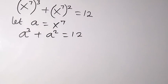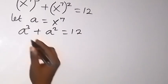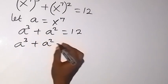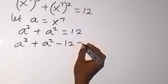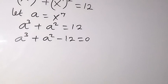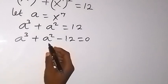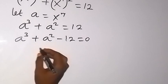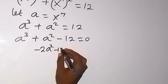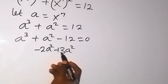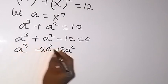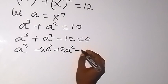From here, we bring 12 to this side to form an equation: a raised to power 3 plus a raised to power 2 minus 12 equals 0. This is a polynomial of degree 3. We can express a raised to power 3 as minus 2a squared plus 3a squared, so we now have a raised to power 3 minus 2a squared plus 3a squared minus 12 equal to 0.